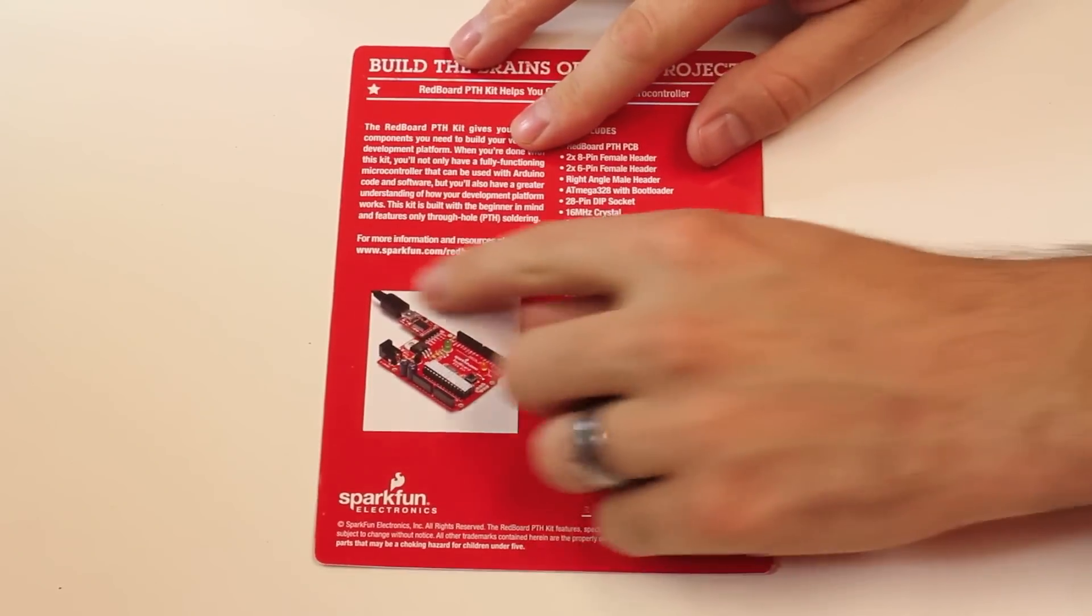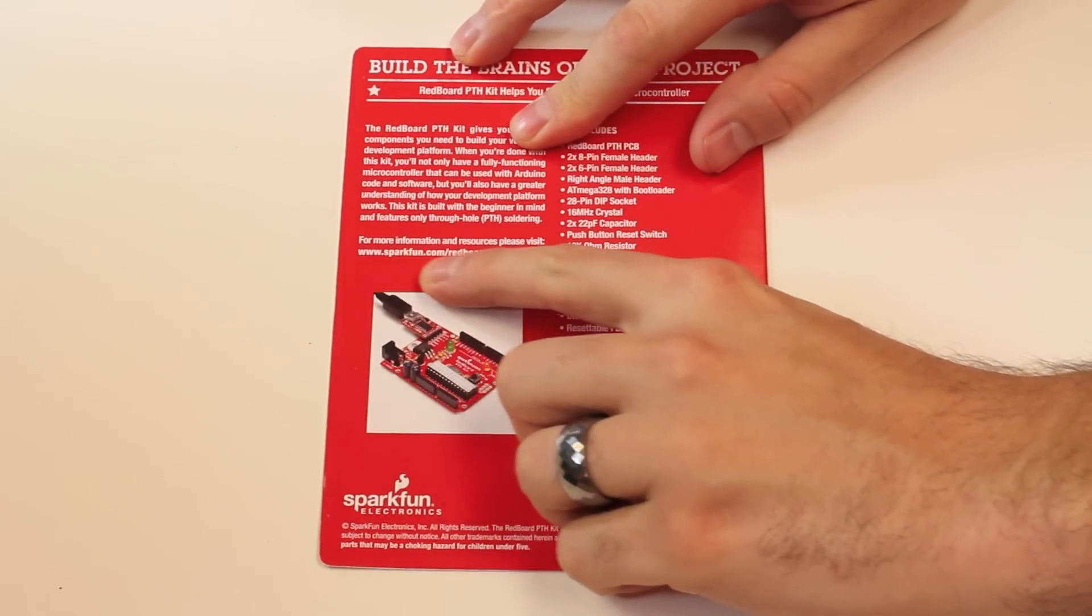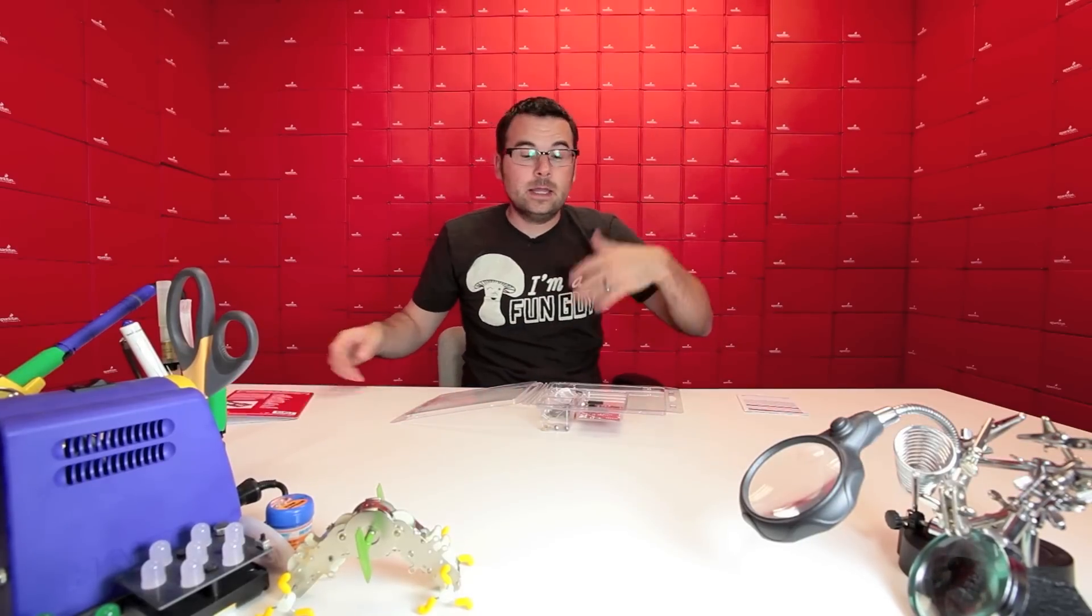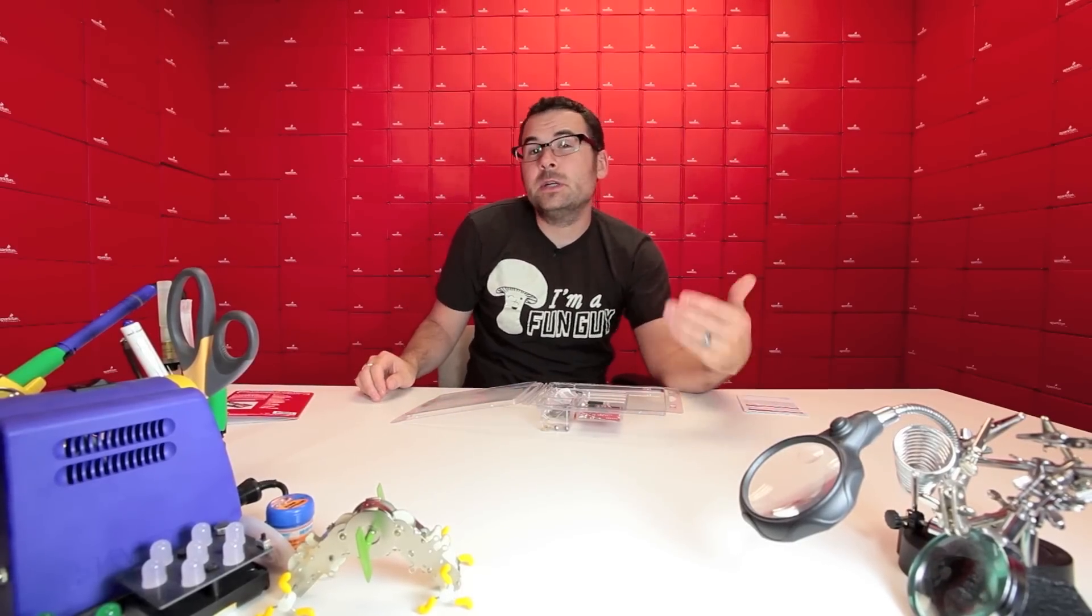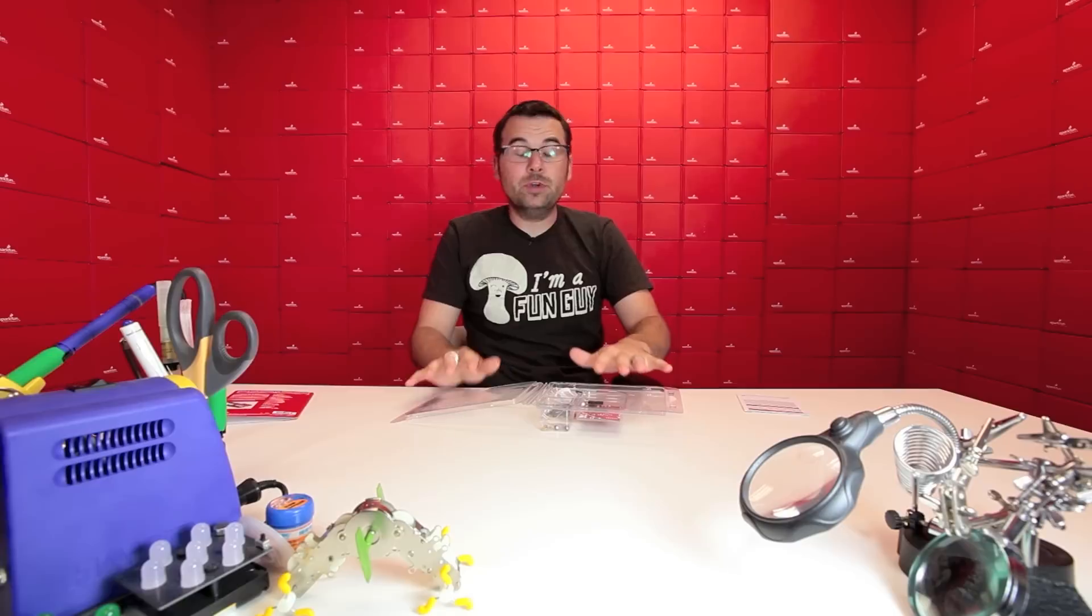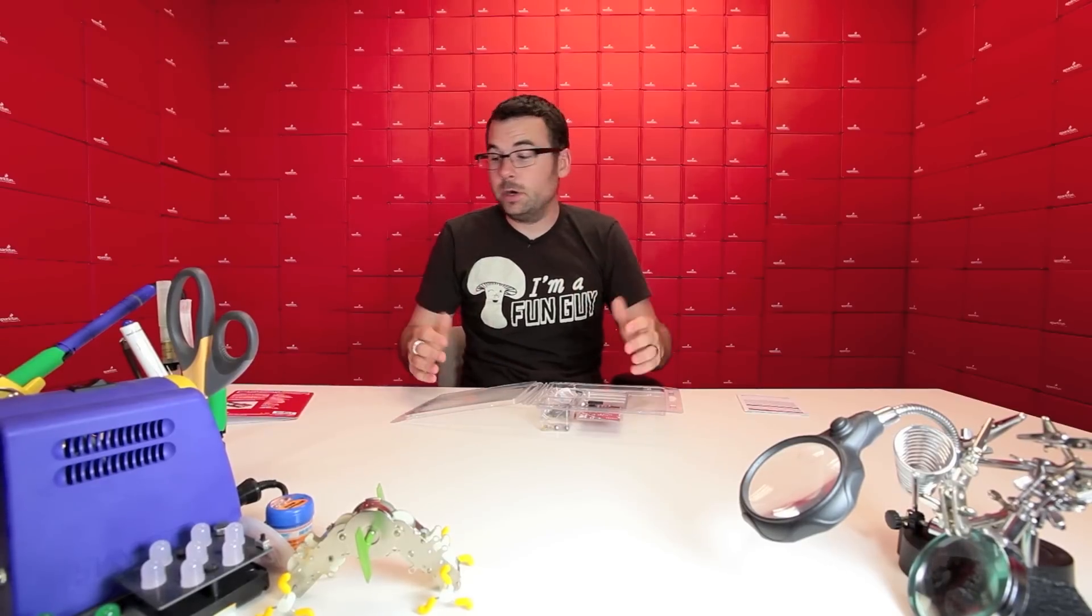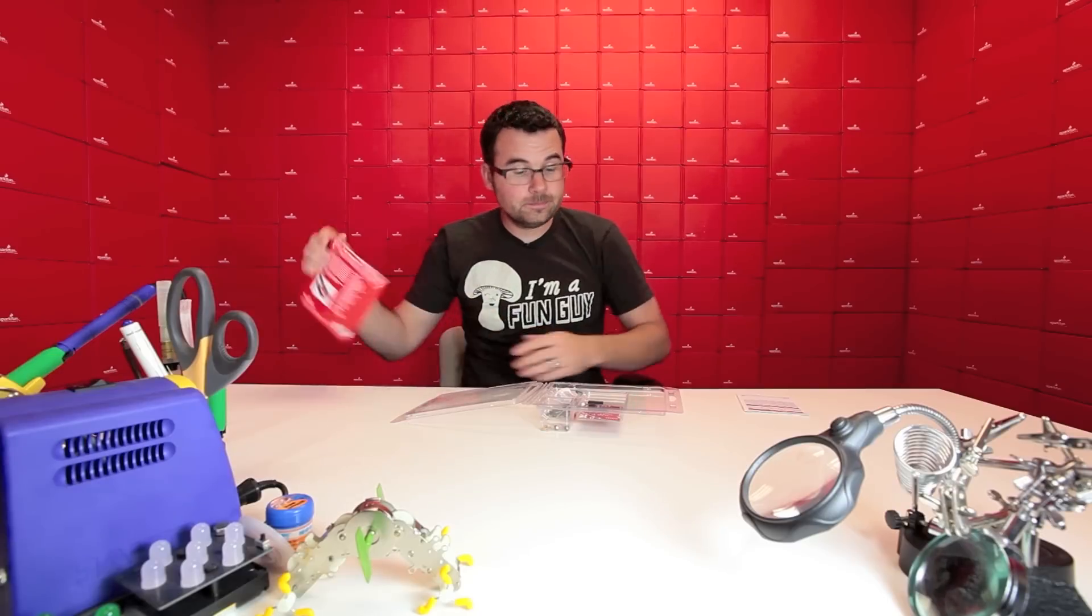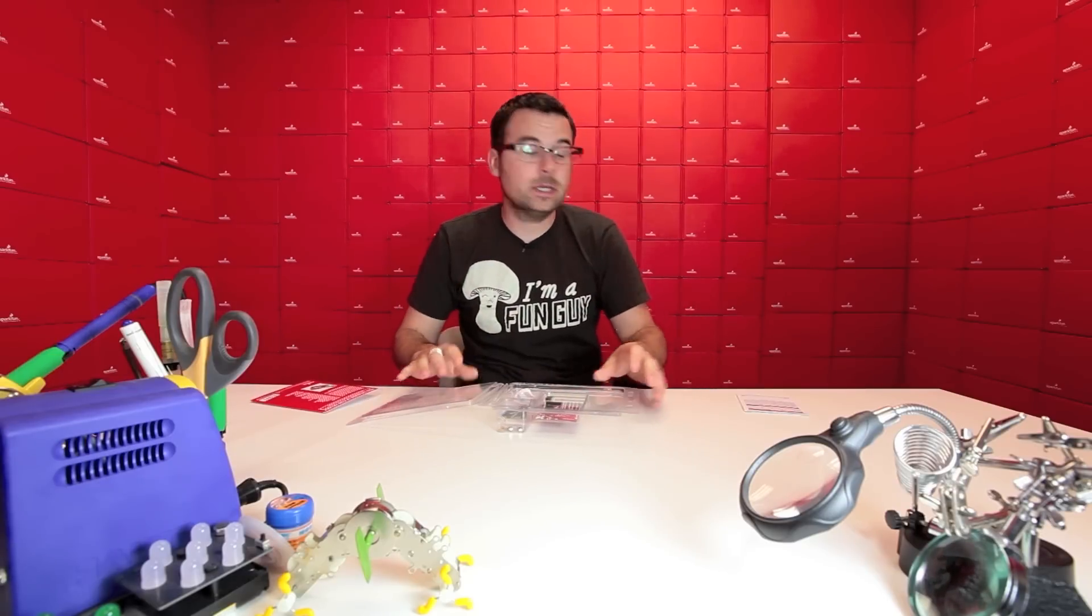All retail has a landing page. So if you look down here, it's got sparkfun.com/redboard kit. This is a specific tutorial just for this kit. Now we don't do a specific tutorial on every single product we have, but retail products have a specific tutorial. So anything that's in retail, you can check out that little link down there. And it'll give you this whole tutorial on how to use this.